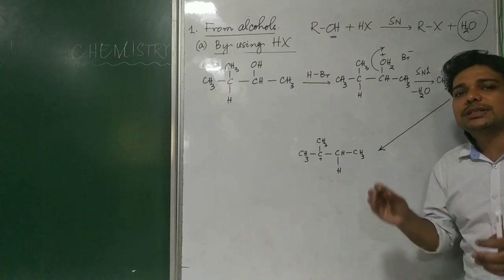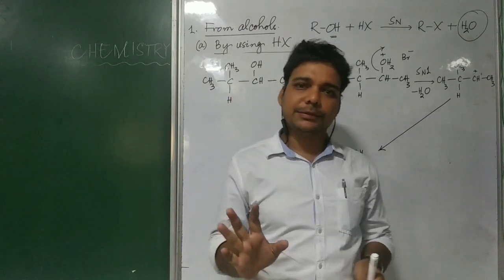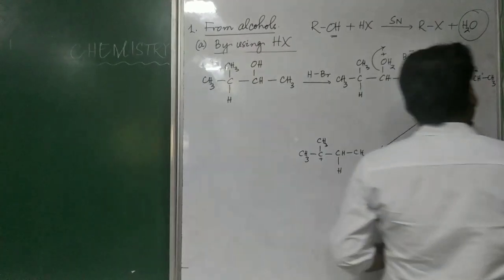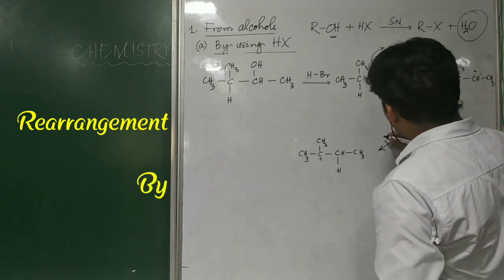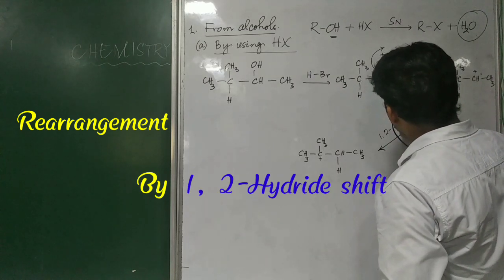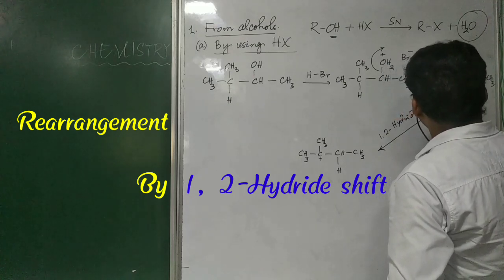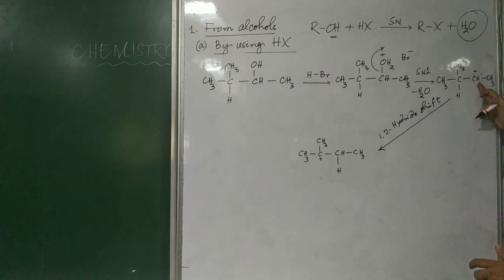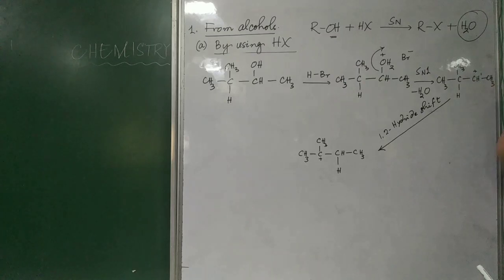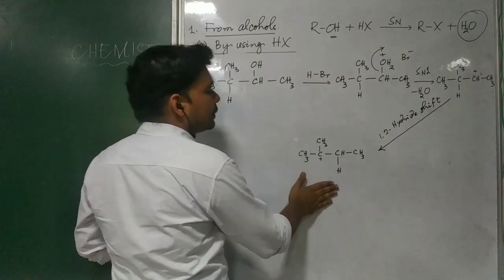These two species are similar with respect to the number of hydrogen atoms and the number of carbon atoms — only a migration of the hydride ion has taken place. This is called a 1,2-hydride shift. Here, '1,2' refers to the adjacent carbon atoms. The hydride ion has been shifted from one carbon to an adjacent carbon, resulting in the formation of this more stable carbocation.